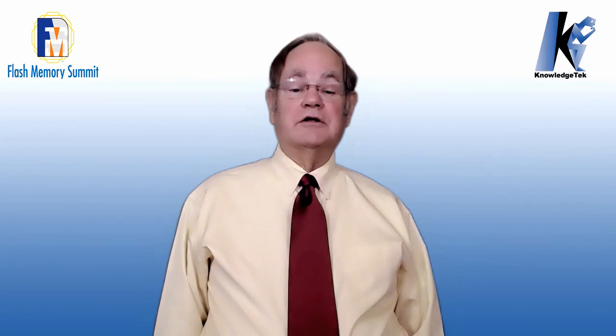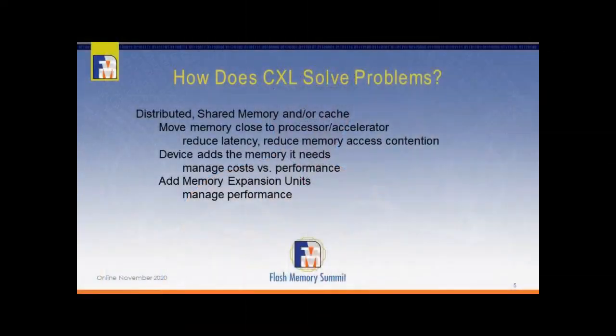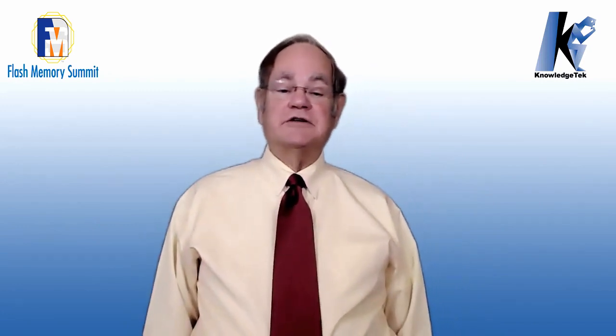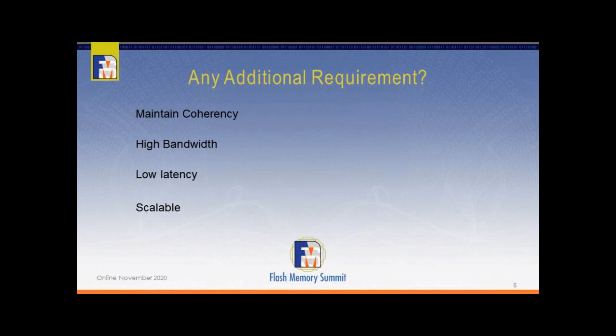Why add this extra complexity and communication? CXL allows system designers to move the memory and cache physically closer to the processor that is using it to reduce latency. When you add remote processors or processing devices, each device brings the memory and cache it needs. This allows system owners to balance performance versus costs, and system administrators can add more system memory by adding memory expansion units. The reasons for CXL are high bandwidth, low latency, and coherency. It must be scalable to address applications with different demands — but the elephant in the room is coherency. We are moving to new ground and it must be designed correctly.